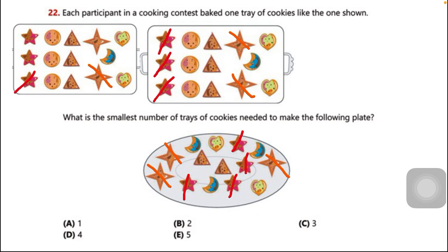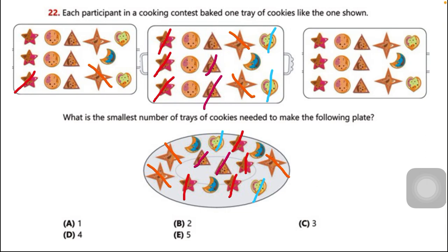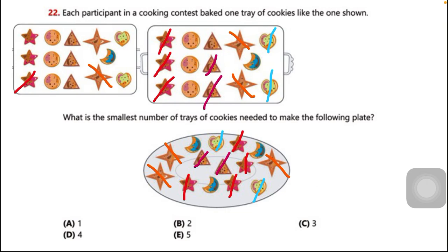Moving to the triangle-shaped cookies: I cut them on the plate and taken them from the tray. The second triangle cookie also comes from the same tray, so we do not need an extra tray for triangles. For the heart-shaped cookie, I cut it and taken it from the tray. The second heart-shaped cookie also does not need an extra tray since there are only two heart-shaped cookies.